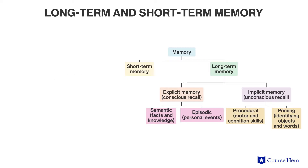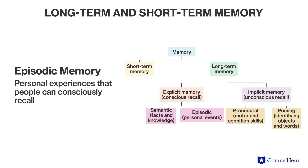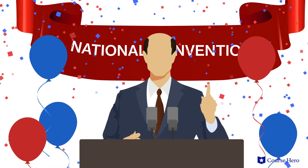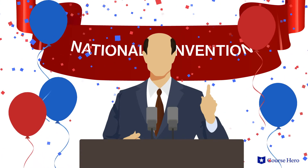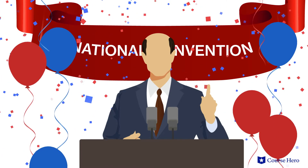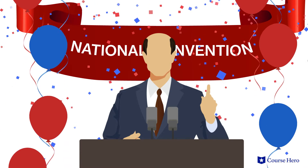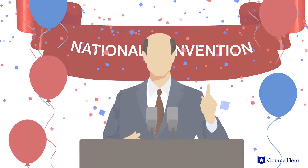Explicit memory for personal experiences is called episodic memory, which is a collection of personal experiences that we can consciously recall. Semantic and episodic memory work together to form explicit memories. For example, remembering the results of the last presidential election would be the semantic component, while remembering how that event made you feel is the episodic component.